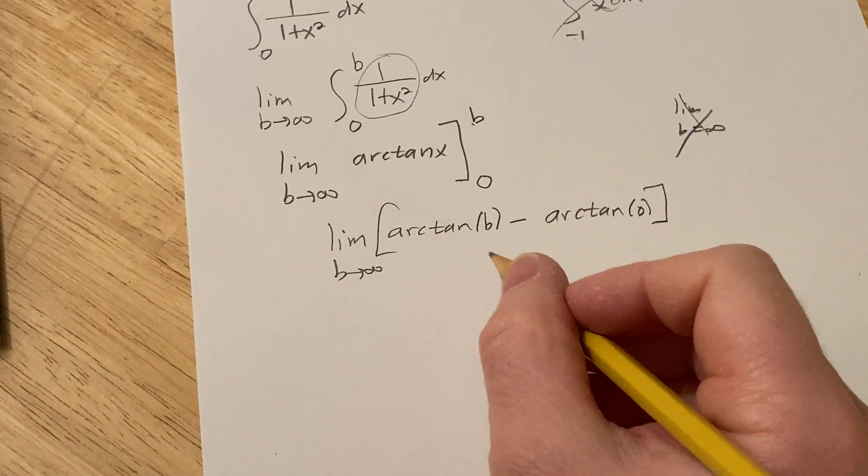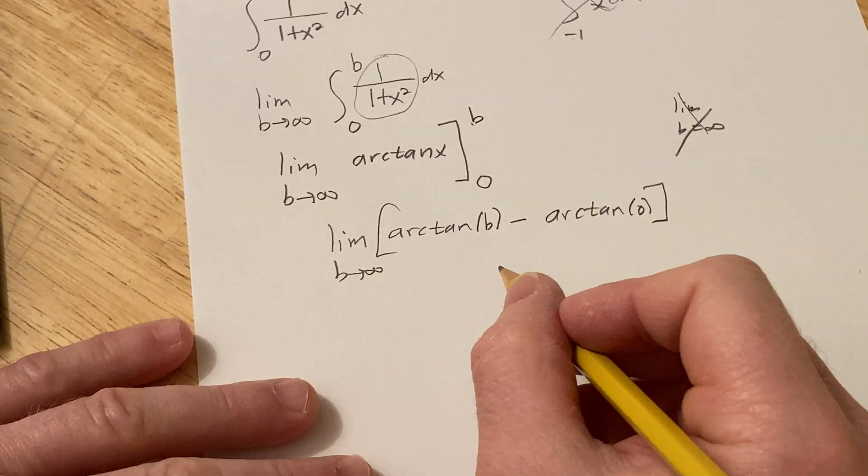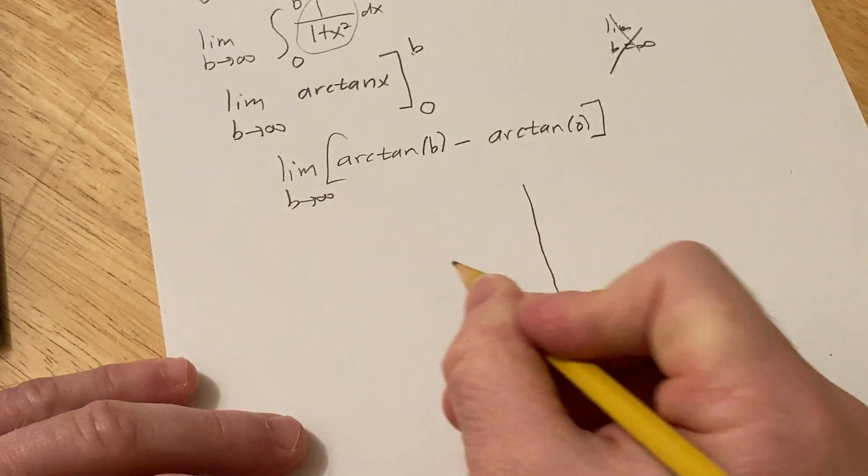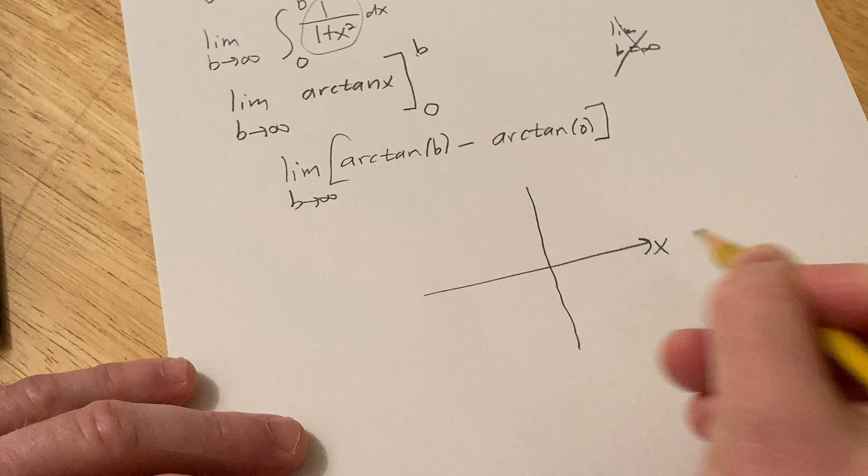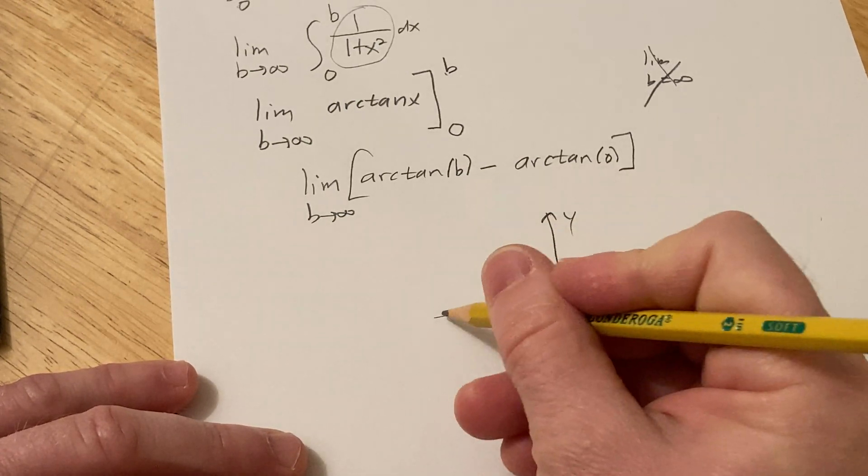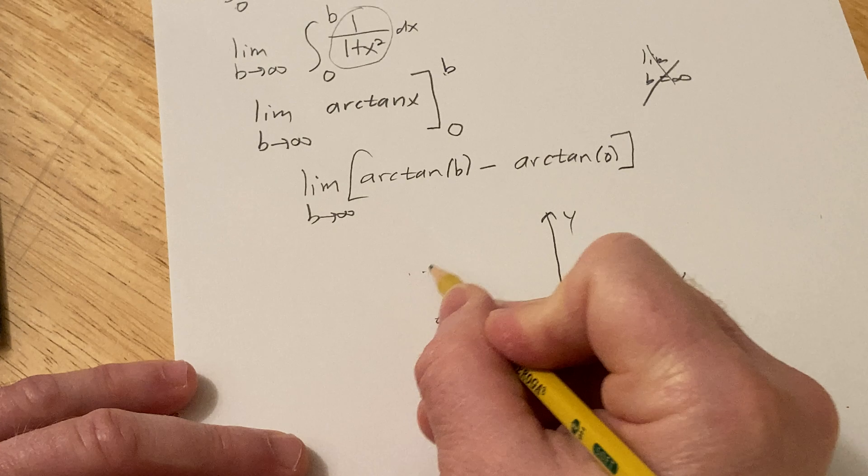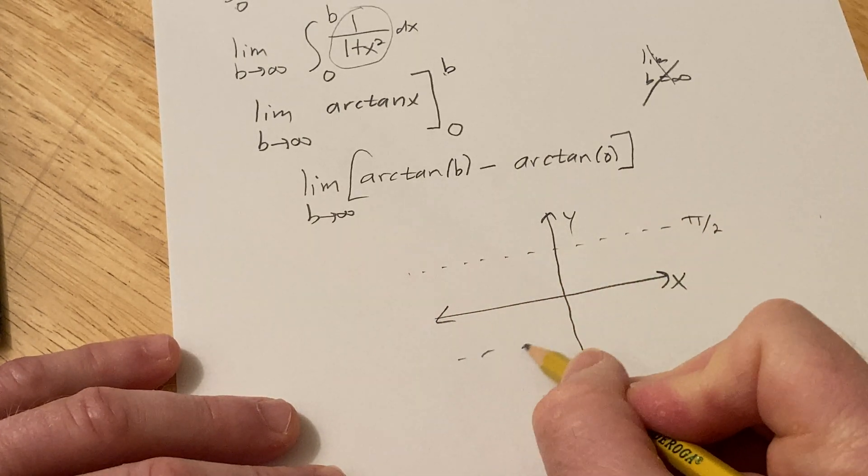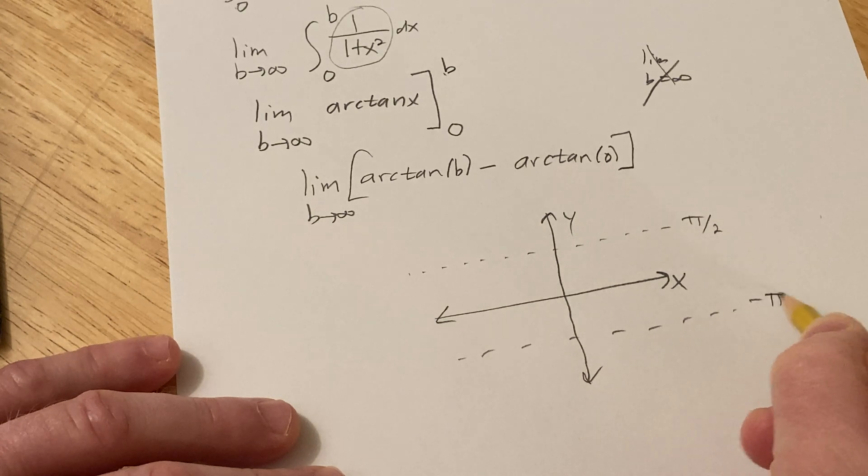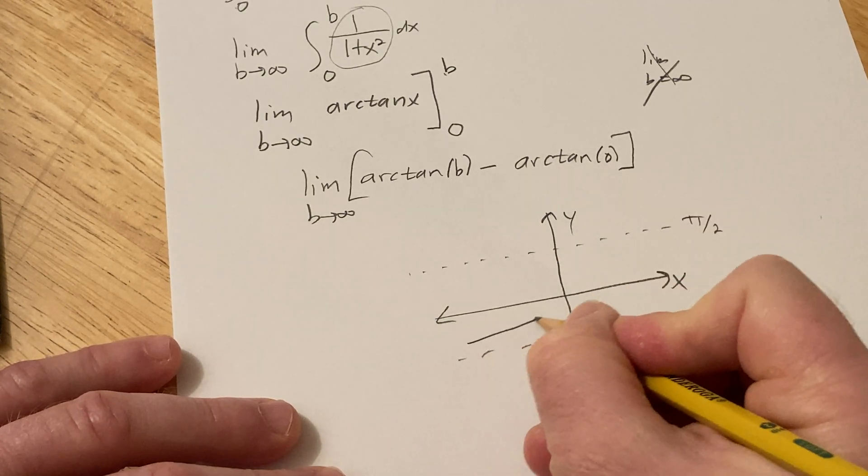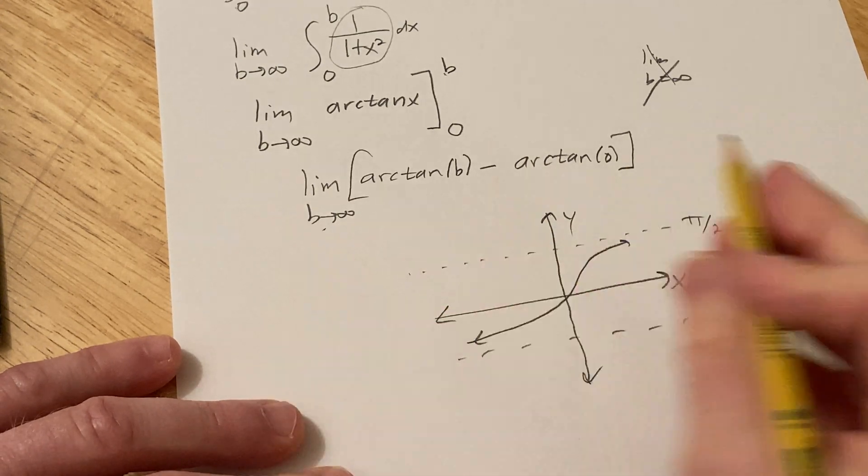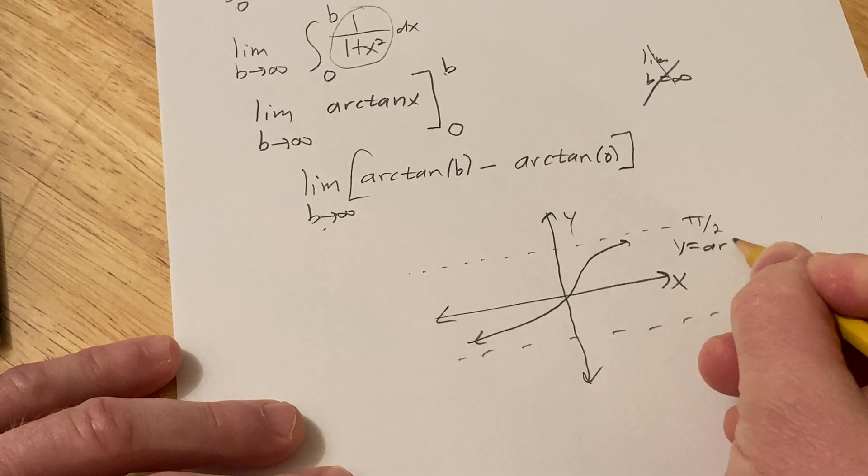Okay, so now we have to think about the graph of arctan to figure out what this is. So the graph of arctan looks like this. This is the x-axis, and this is the y-axis, and arctan has two horizontal asymptotes. It has one here at pi over 2, and it has one here at negative pi over 2, and it looks something like that. So as B approaches infinity, and this is the graph of y equals arctan x.